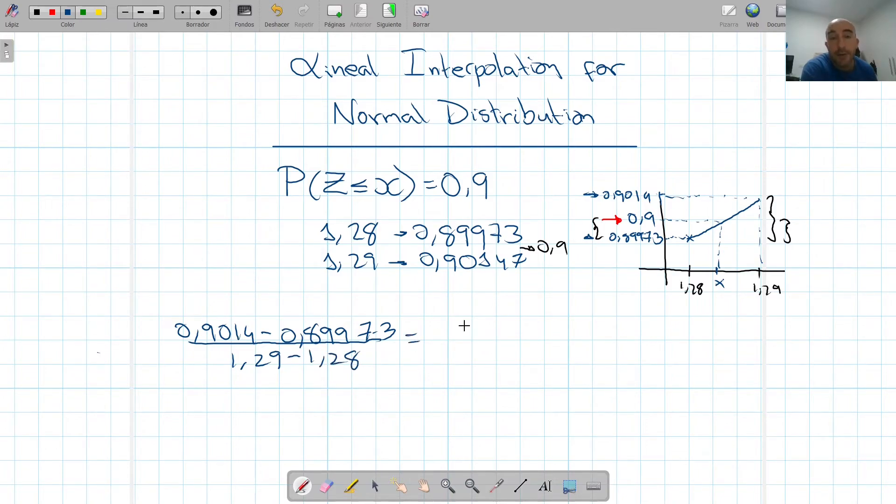And now on the other side of the equation, I'm going to do the same thing but using my point and any of the other ones. The logical thing is to use the lower one so that we don't have negative numbers. So 0.9 in the y's, we had y's here, so we're going to use y's on the numerator too, minus 0.89973, and then we had x in the denominator, so we're going to do the same thing, x minus 1.28.